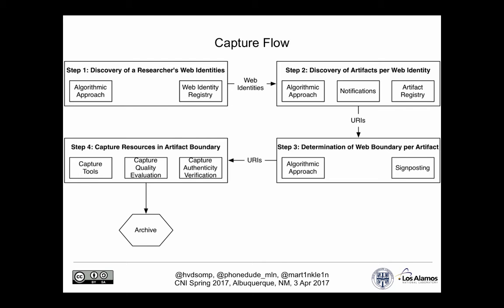This is the flow we are currently exploring to look into this problem. There are four steps in the chain we're considering. First is discovering the web identities of our scholars — from an institutional perspective, how do you figure out what all these identities are in these portals? Second, once you've discovered these identities, go find the artifacts attached to those identities. Third, there's the notion of boundary — how many URIs do you really need to capture to get the essence of an entire artifact? And the last step is to actually go and capture the materials for each of those URIs.